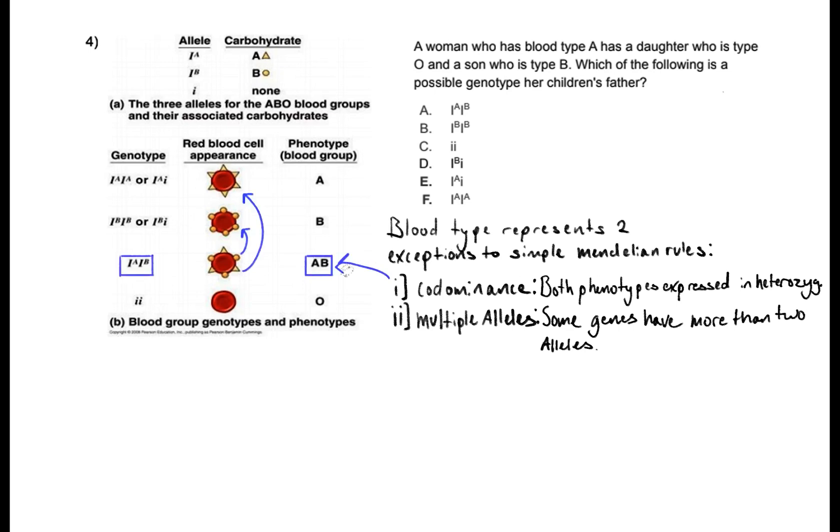Here's an arrow a blue arrow showing where we have that codominant phenotype where we have both those circles and the triangles and then here is a green arrow pointing to our multiple alleles within our blood type gene. Anyways, let's get to the question now.